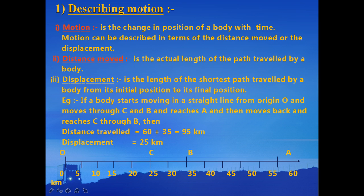If an athlete is running in a circular path and completes one lap, the distance covered is the circumference of the circular lap, that is 2πR. But the displacement is 0, because there is no difference between the initial position and the final position — the athlete has reached the starting point again. The SI unit of both displacement and distance is the same, and that is meter.